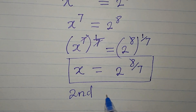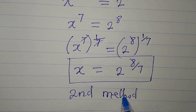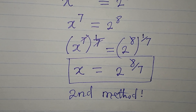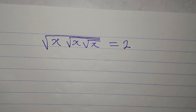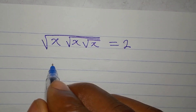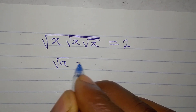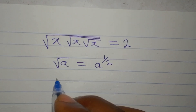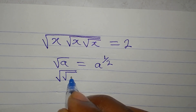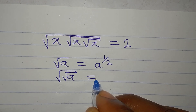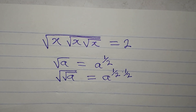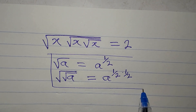Now let's go to the second method. If you didn't follow the first method, sit back — I believe the second will be easier. By the way, do you know that the square root of a is the same as a to the power of 1 over 2? And the square root of the square root of a is a to the power of 1 over 2 times 1 over 2, because it is under two square root signs. Let's continue from here.